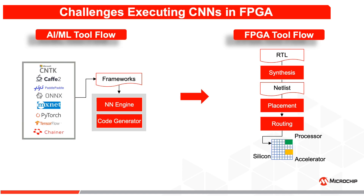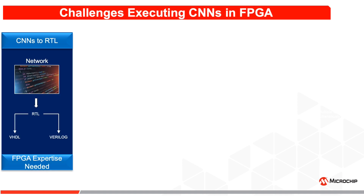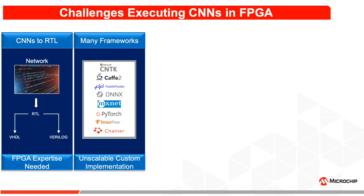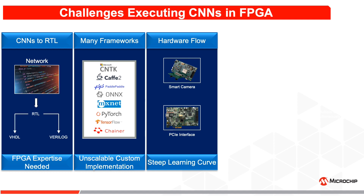There are many challenges in porting neural network algorithms to run on FPGAs. Networks are developed in software, whereas FPGAs require RTL code. They are trained using many popular frameworks which make custom RTL implementation difficult. Flexible hardware reference designs are not easily available.